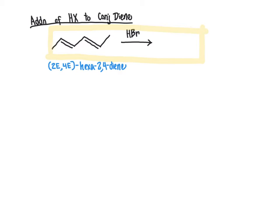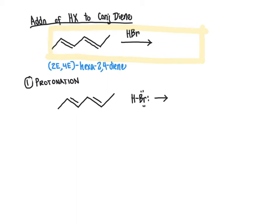In this symmetrical conjugated diene, we follow a mechanism that initially looks a lot like alkene addition reactions. The first step, as is always the case when reacting with any acid, is protonation. In this protonation reaction, we take our pi bond from one of the two alkene groups and use it as a base to grab a proton from HBr, breaking the hydrogen-bromine bond to give bromide anion, Br⁻, as well as our carbocation intermediate.